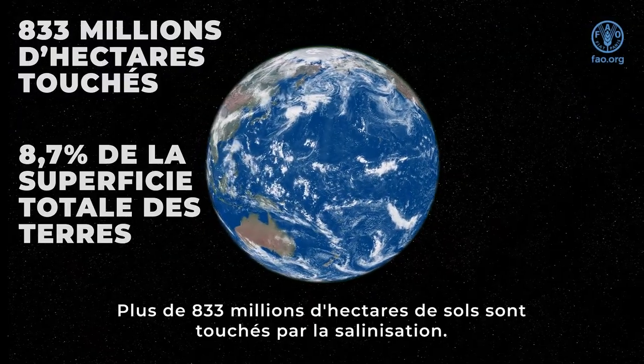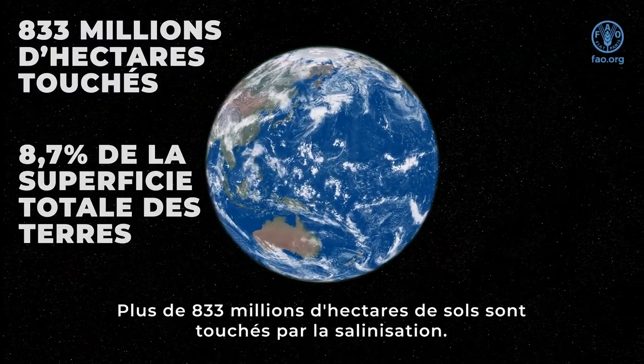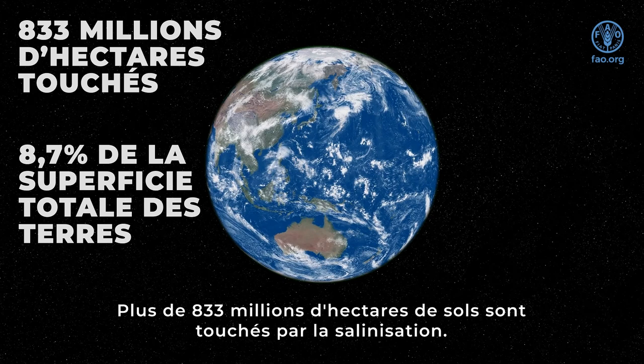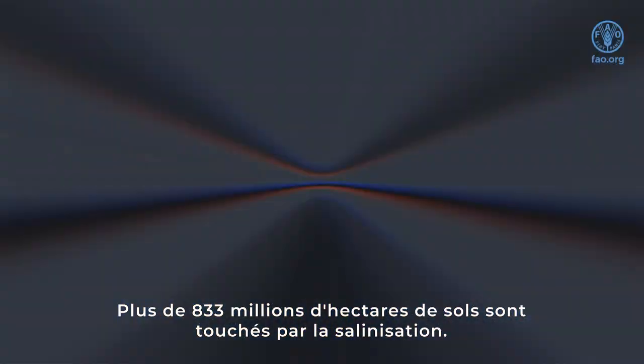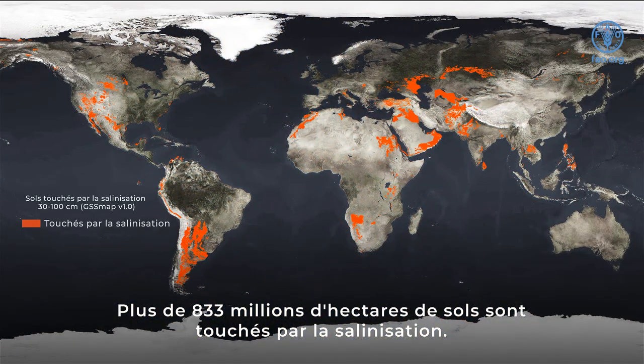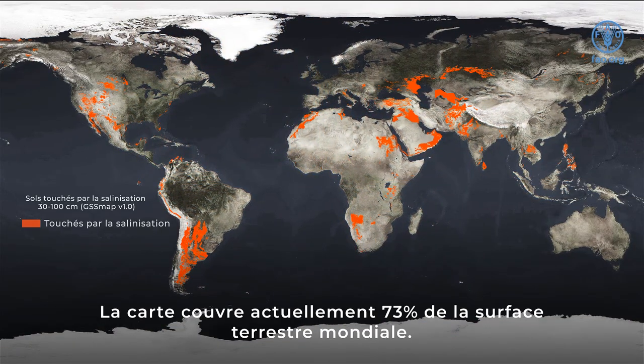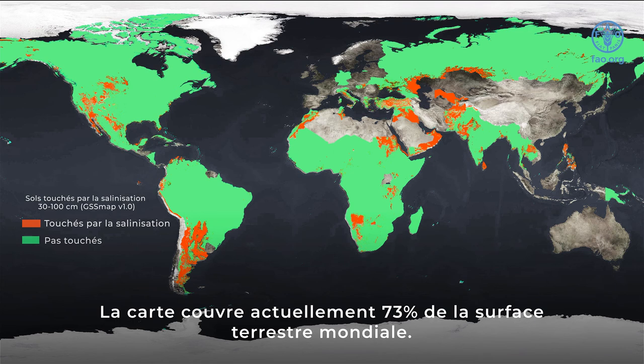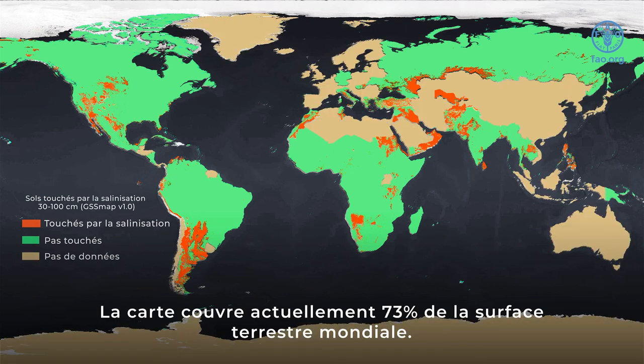Over 833 million hectares are salt affected soils. The map currently covers 73% of the global land area.